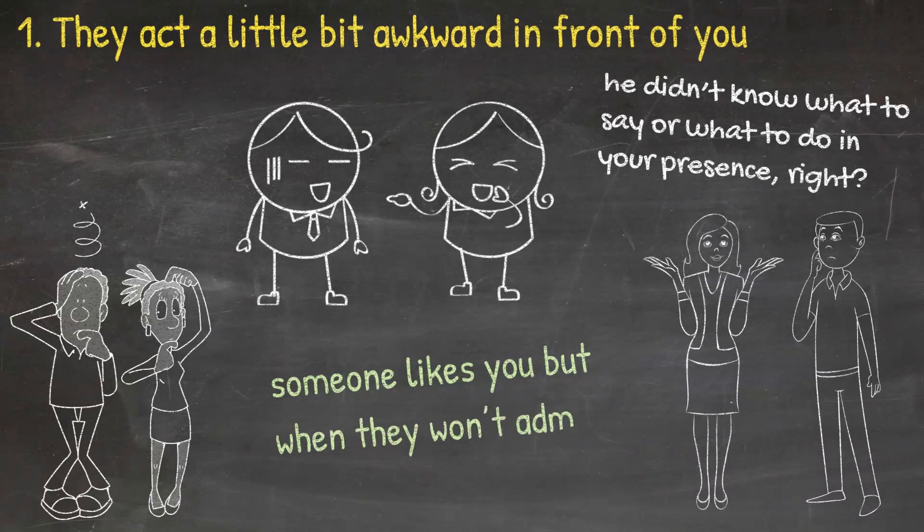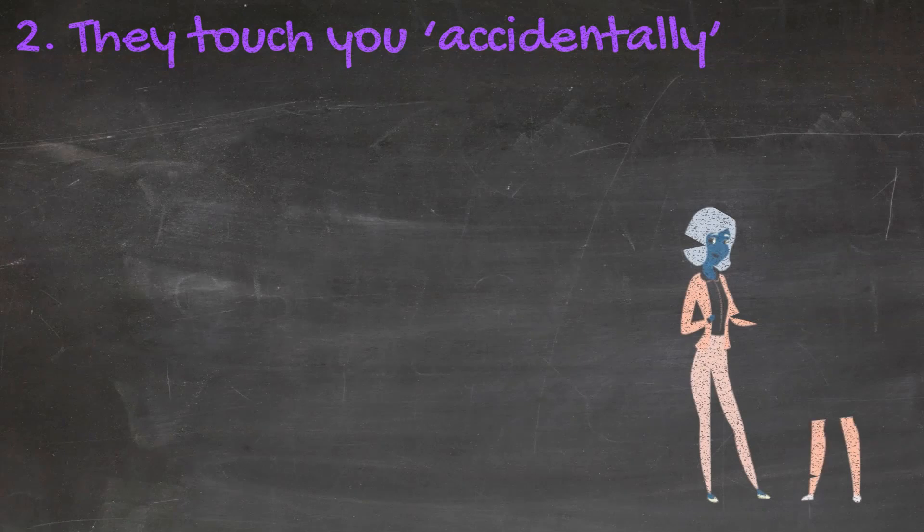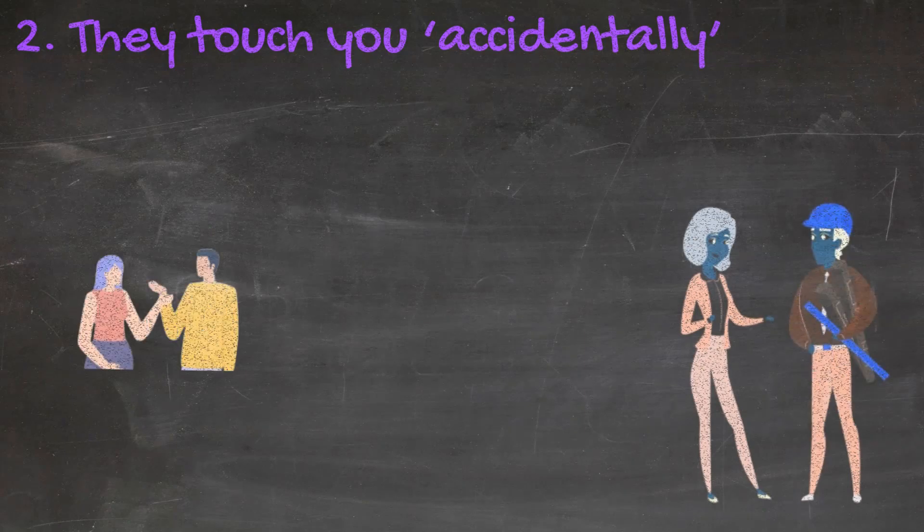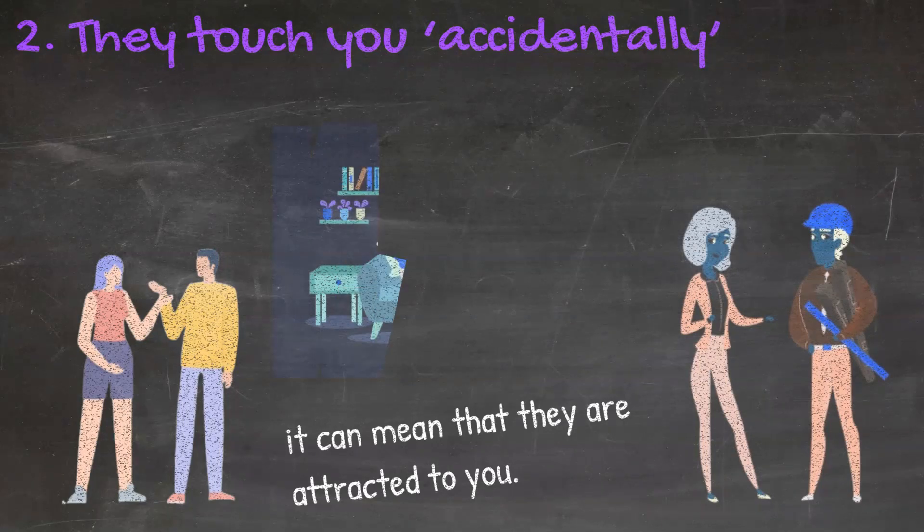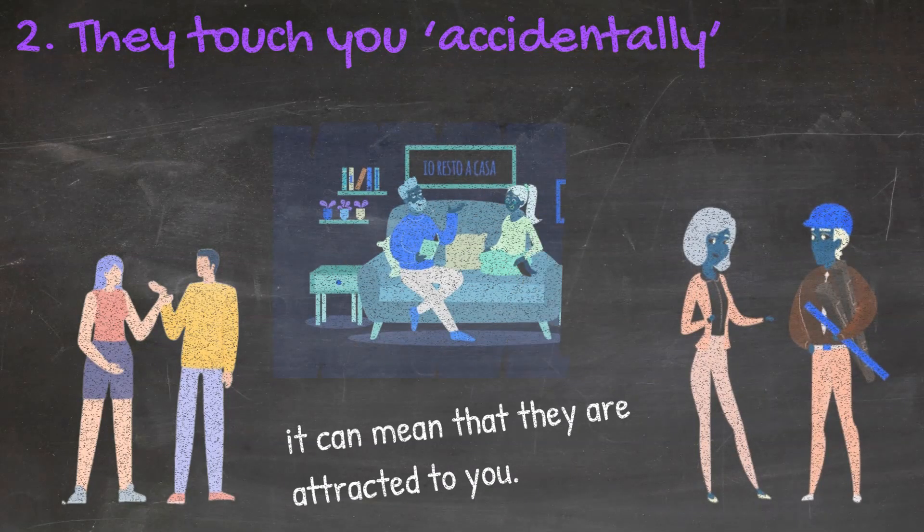Two: They touch you accidentally. When someone touches you accidentally, it can mean more than just one thing. If that is a person you have just met and you are trying to make some kind of relationship with, it can mean that they are attracted to you. If they want to touch you, it is a subtle sign that they are interested in you and they want you close. They just want to feel their own skin on yours and in that way be closer to you.